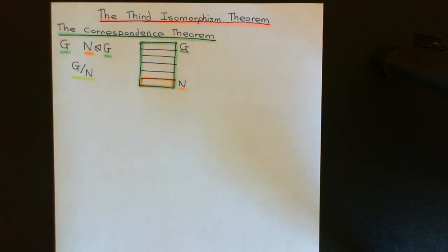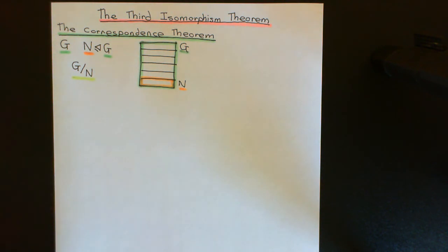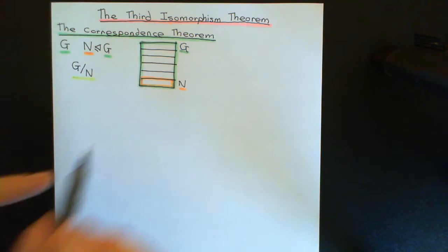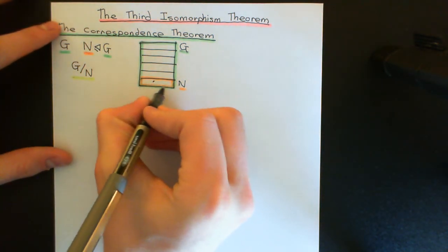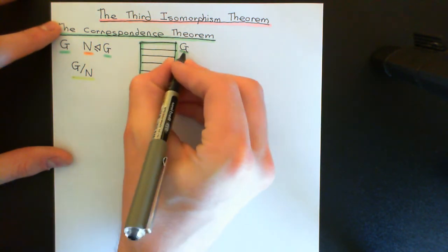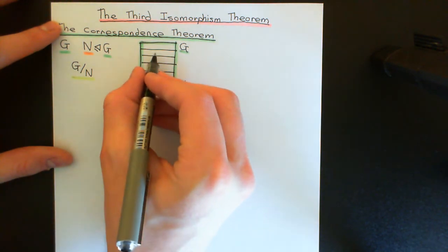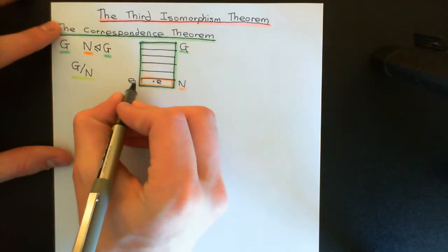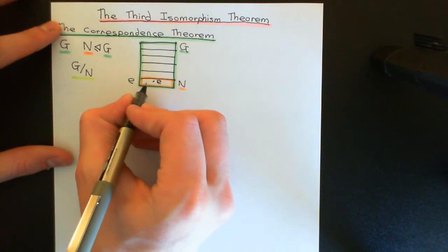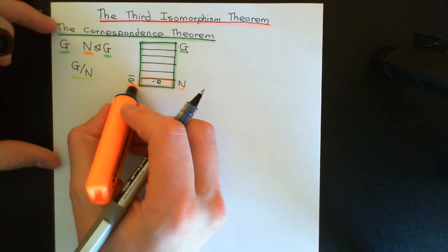We partition the group into cosets, and then the elements of our quotient group become the actual cosets, which we define a composition law on. We name cosets by picking a representative and putting a bar over it. The normal subgroup itself is the coset containing the identity element of G, so we call it identity-bar. More generally, a coset containing representative A is called A-bar — pick a representative, put a bar over it.